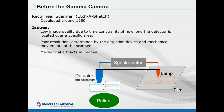Before the modern gamma camera, there was a detection device called a rectilinear scanner, developed around 1950. It's a very simplistic device — a detecting element is directly coupled mechanically to a display-generating device, which could be a lamp exposing film or an electrode arcing through temperature-sensitive paper. It literally scans left, moves up a little, right, moves up a little — almost like an Etch-a-Sketch across the patient.